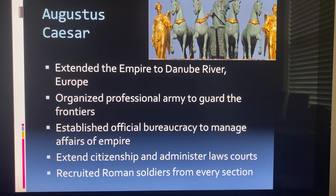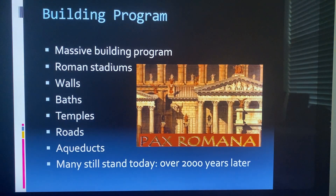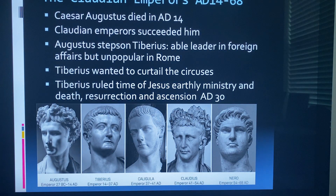Augustus Caesar extended the empire to the Danube River in Europe, organized a professional army to guard the frontiers, and established an official bureaucracy to manage the affairs of the empire. He extended citizenship to certain peoples, administered courts of law, and recruited Roman soldiers from every section. He also had a massive building program — Roman stadiums, walls, baths, temples, roads, and aqueducts — many of which still stand today over 2,000 years later.